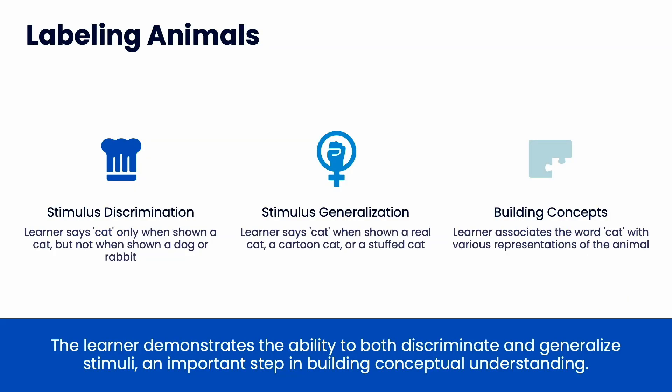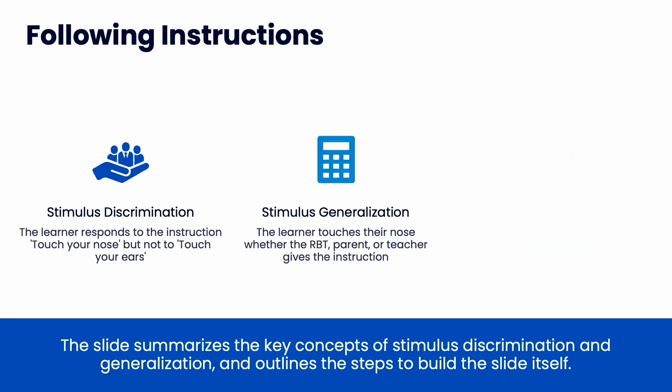Labeling animals — stimulus discrimination: the learner says cat when shown a cat, but not when shown a dog or a rabbit. Stimulus generalization: the learner says cat when shown a real cat, cartoon cat, or stuffed cat. That's how we build concepts. When the learner associates the word cat with various representations of the animal — which are all correct — we would say you've built the concept of cat.